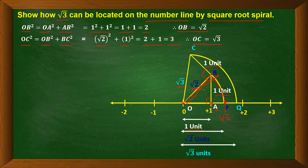Now to locate √3 on the number line, we again keep the compass pointer at O, and with OC as radius, draw an arc which cuts the number line at Q. So at Q we get the point √3. P was √2 and Q is √3.